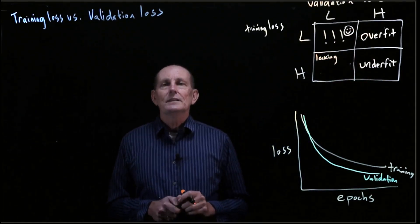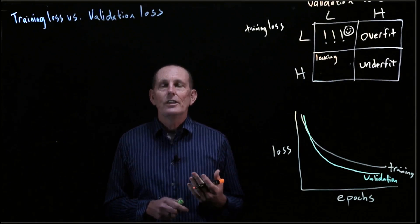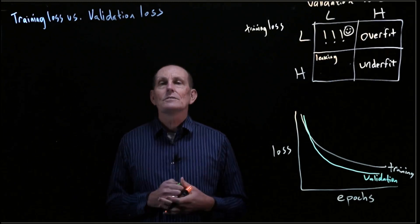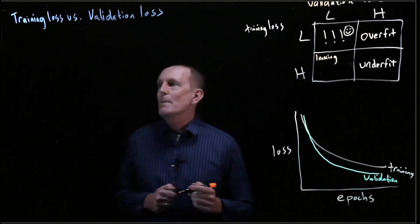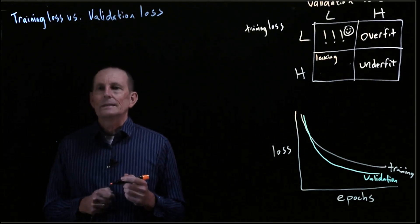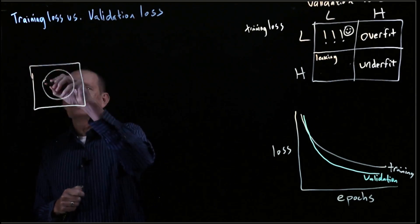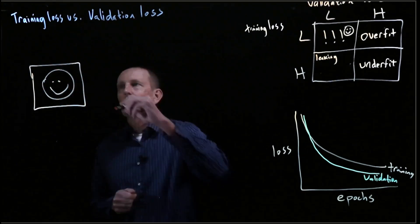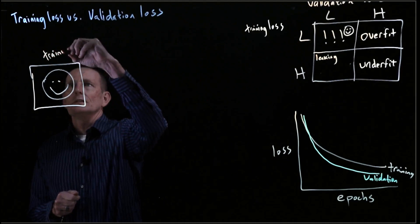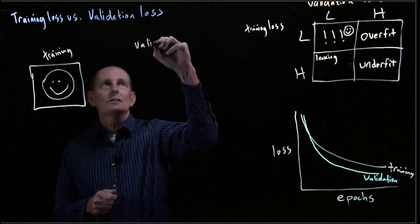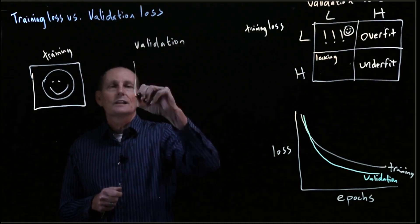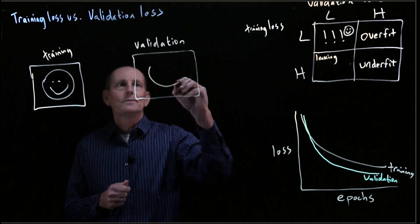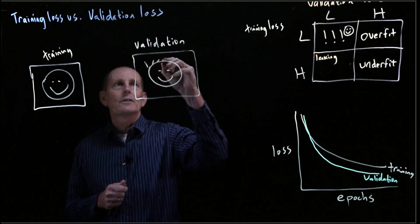A second possibility would be that somehow the training data set is harder than the validation data set. How could that be? Maybe we're doing some sort of data augmentation. So we've got a face in here like this, and these are the sorts of faces we see in both the training data set and in the validation — although they're slightly different in the validation. We might have a particularly happy face with hair on it, let's say.